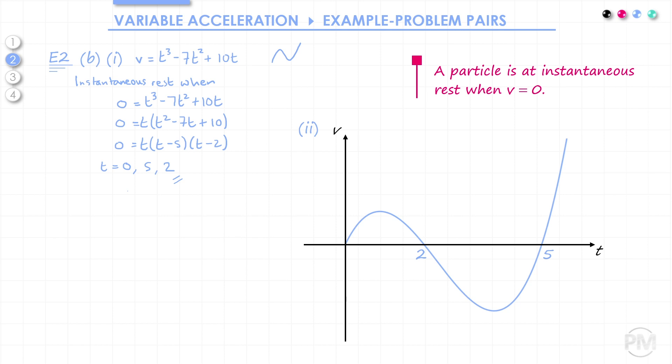Make sure you don't draw anything to the left of t equals 0, because we're talking about a particle moving in time, and negative time in this sense would have no meaning. Also, if you encounter a similar question where the graph crosses the vertical axis, make sure you mark that point on your graph as well as the horizontal axis intersections.